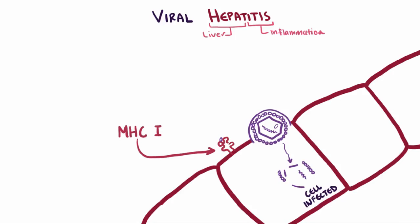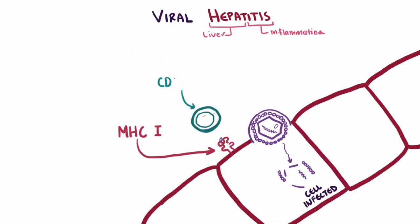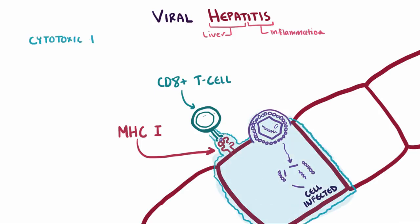At the same time, you've also got these immune cells infiltrating the liver and trying to figure out what's going on. The CD8-positive T cells recognize these abnormal proteins as a sign that the cells are pretty much toast, and the hepatocytes then go through cytotoxic killing by the T cells and apoptosis.